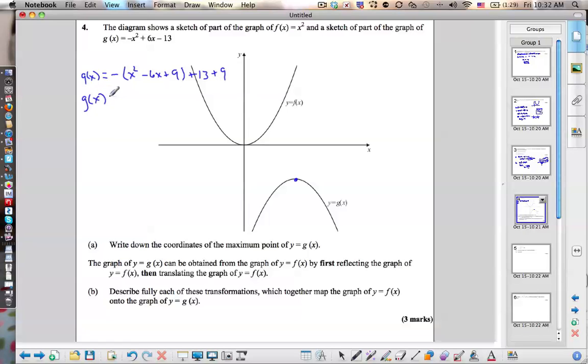So g of x equals negative x, and it's always half of this, minus 3 squared, plus, and that's 22.